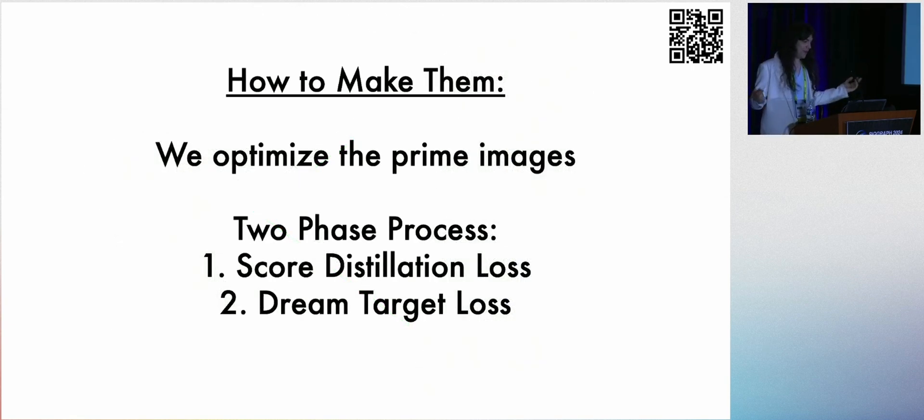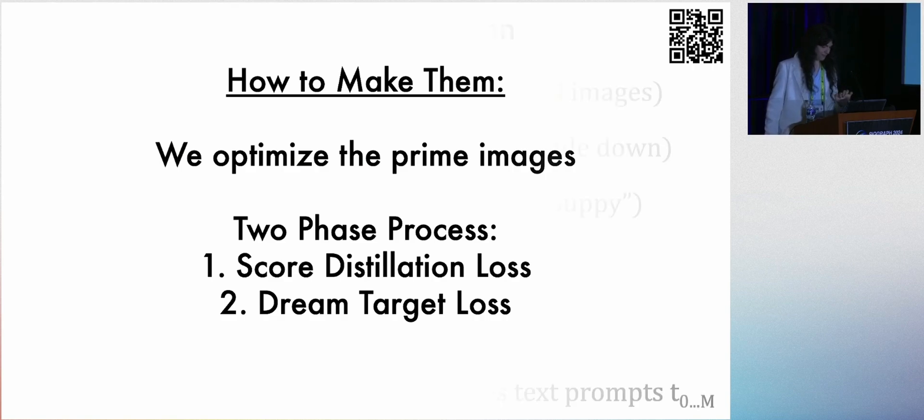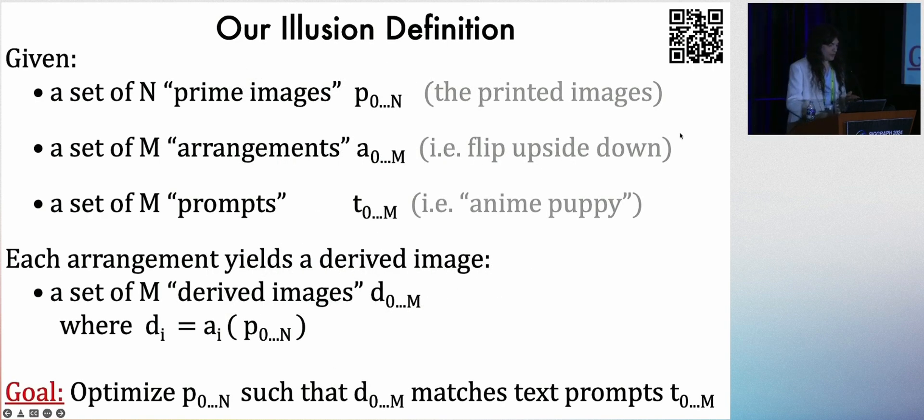So how do we make these? We have a two-phase process where we optimize the prime images. So this was the previous definition before, but the goal is to optimize the primes so that the derived images match a set of text prompts.